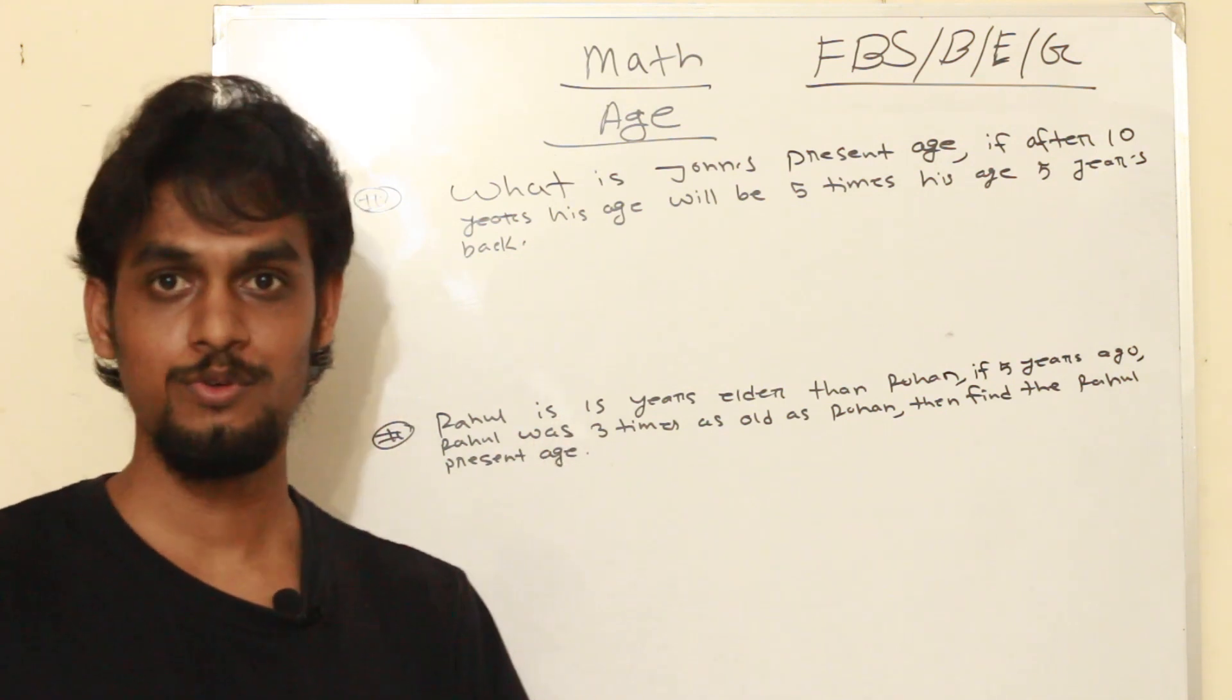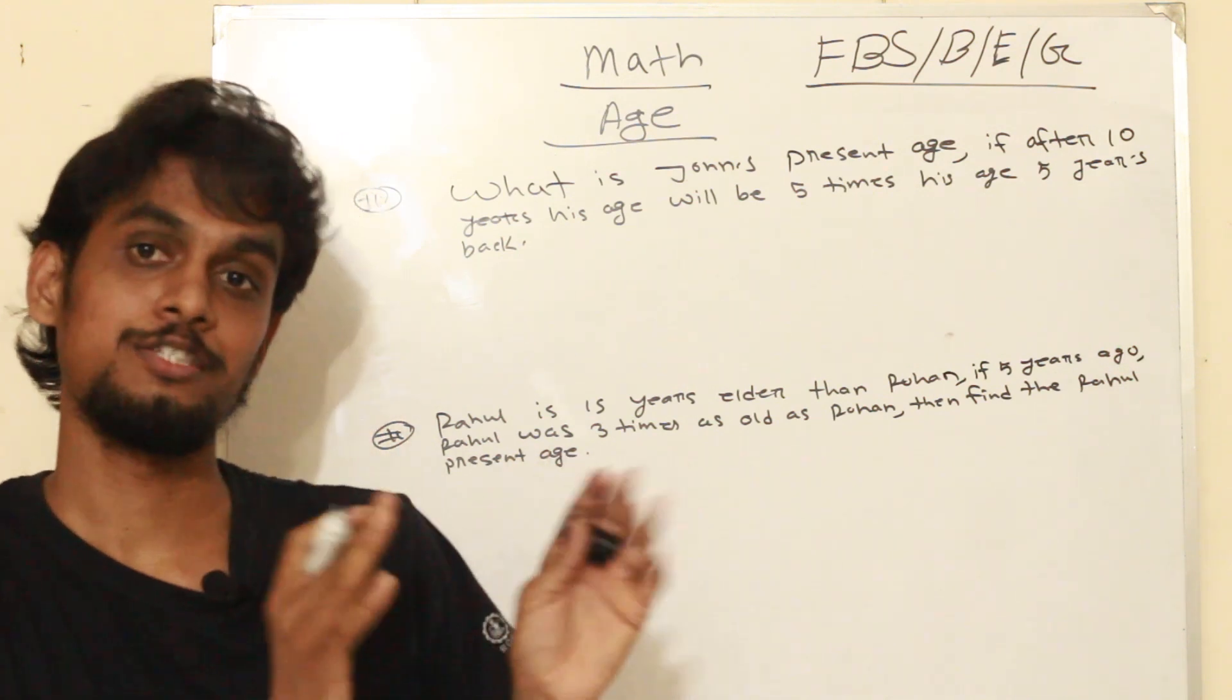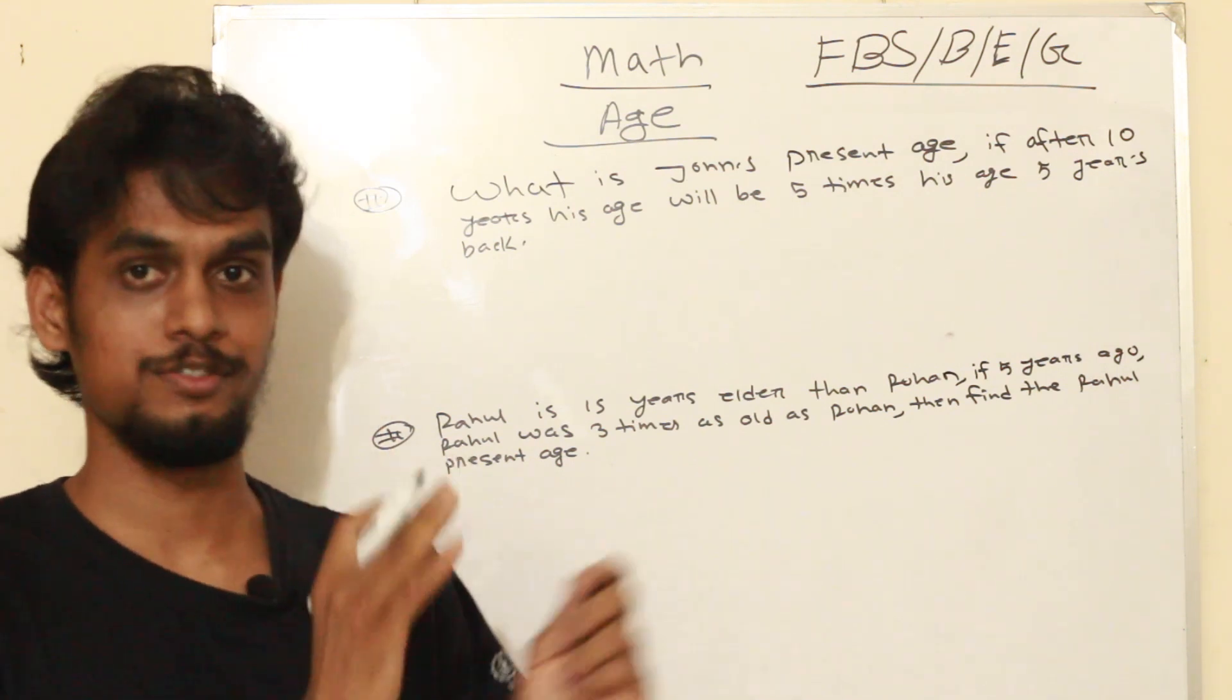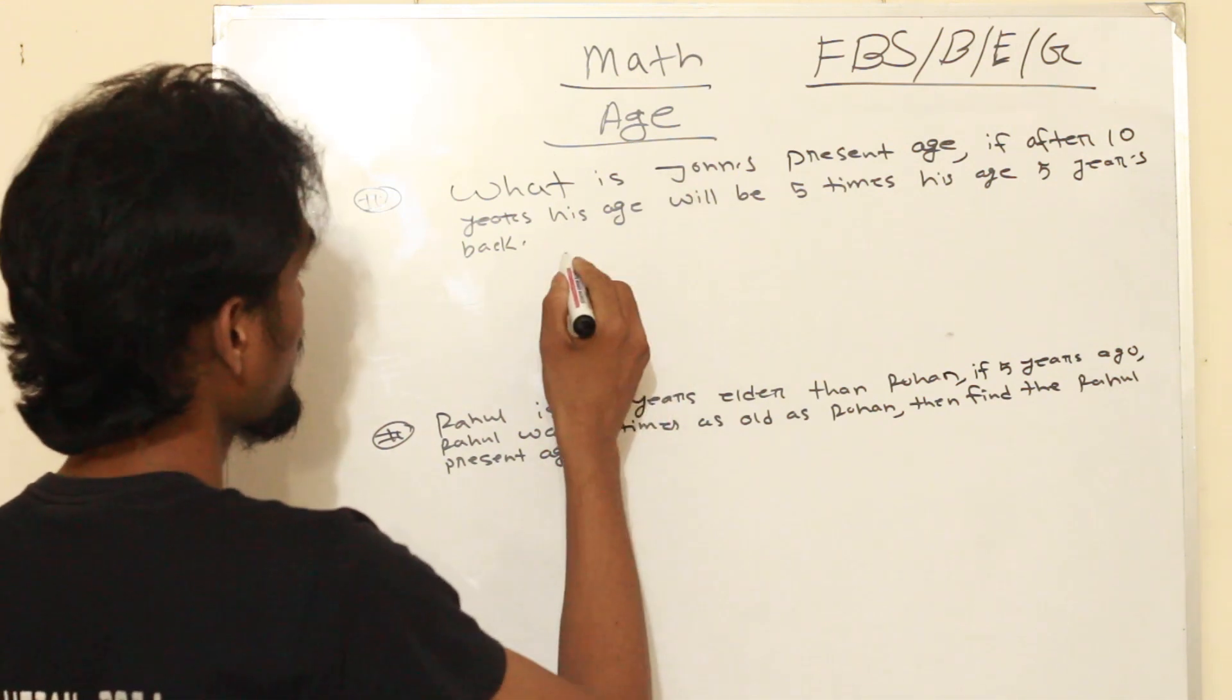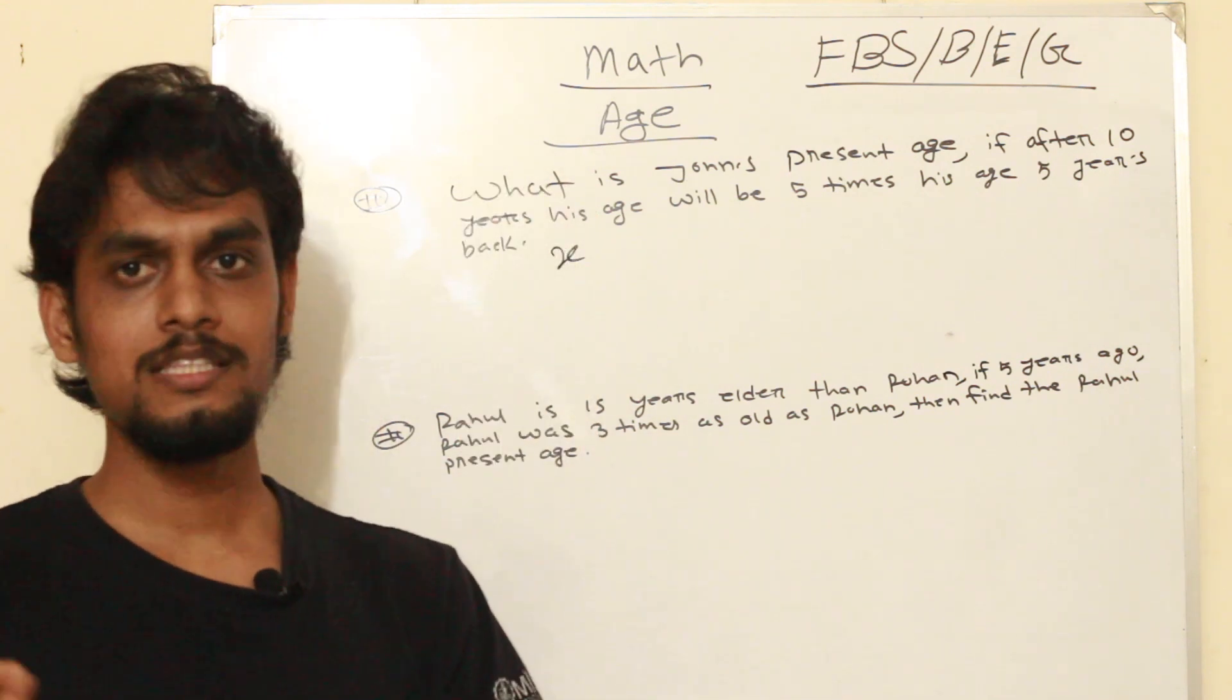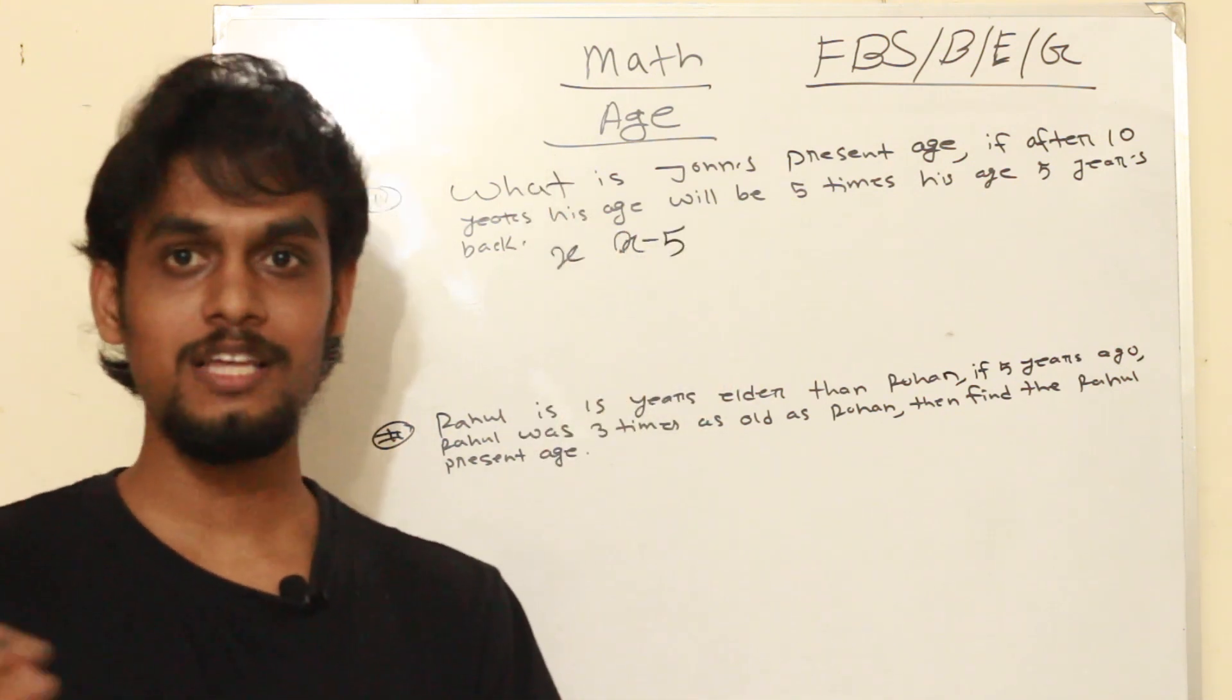The question is asking what is John's present age - 10 years later his age will be 5 times what his age was 5 years ago. Let me show you how to solve this math problem. Let John's present age be x.